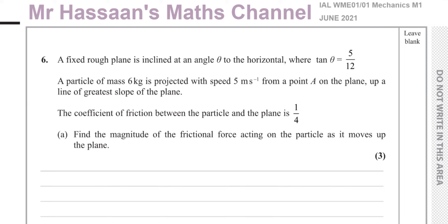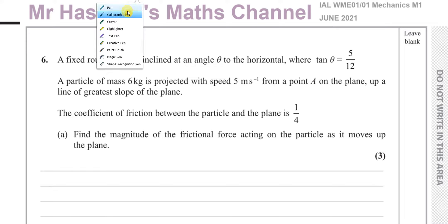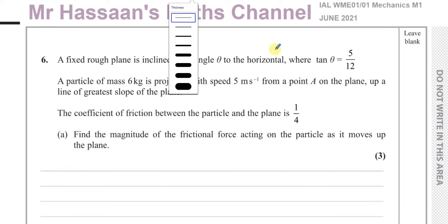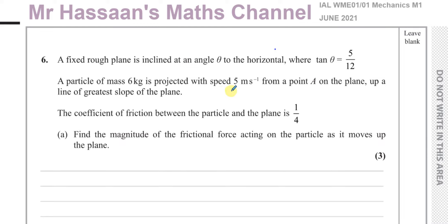Welcome back. I'm on question number six from the June 2021 International A-Level Edexcel Mechanics M1 exam. This question is about inclined planes and friction and SUVAT. A fixed rough plane is inclined at an angle theta to the horizontal, where tan θ = 5/12. A particle of mass 6 kg is projected with speed 5 m/s from point A up a line of greatest slope. The coefficient of friction is 1/4. Part A asks us to find the magnitude of the frictional force as it moves up the plane.